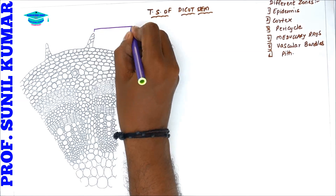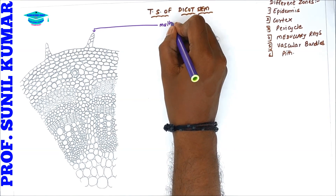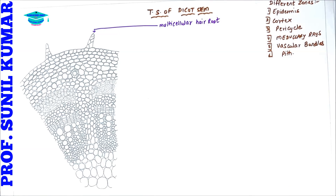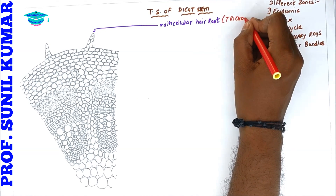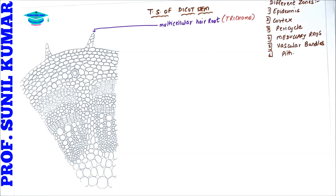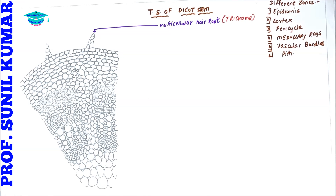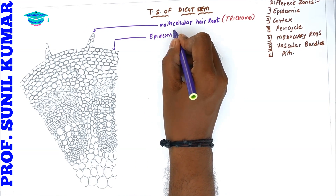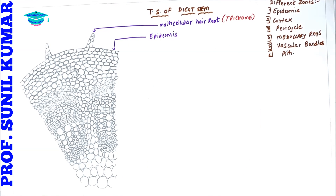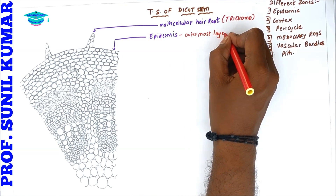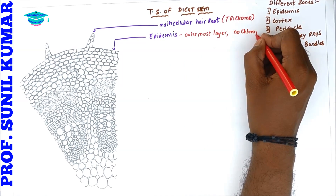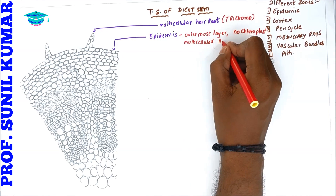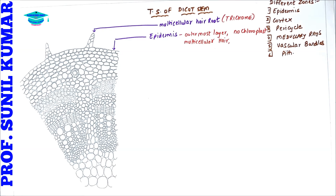The multicellular hair root is also called a trichome. This trichome may or may not be present. Below this structure is the epidermis — the word 'epi' means above and 'dermis' means layer, so it is the outermost layer. The epidermis has no chloroplast, but has multicellular hair and stomata.